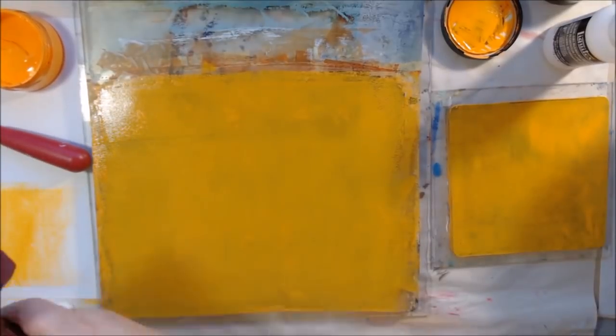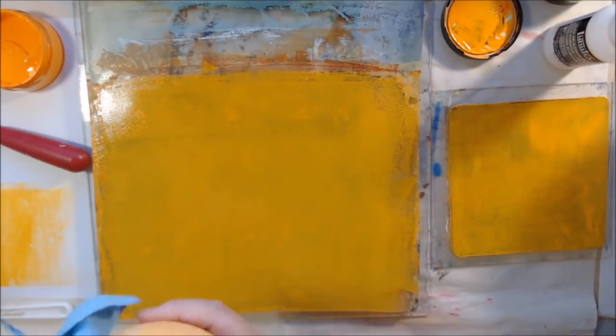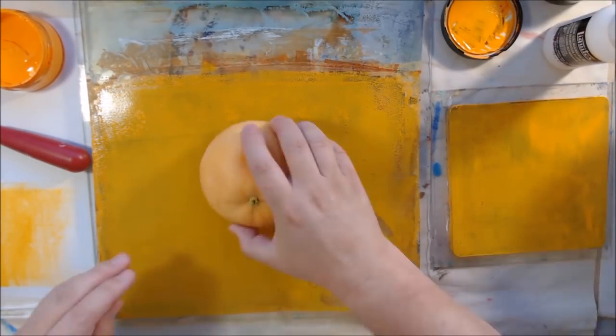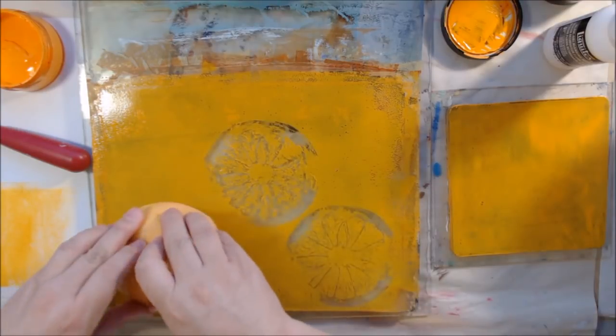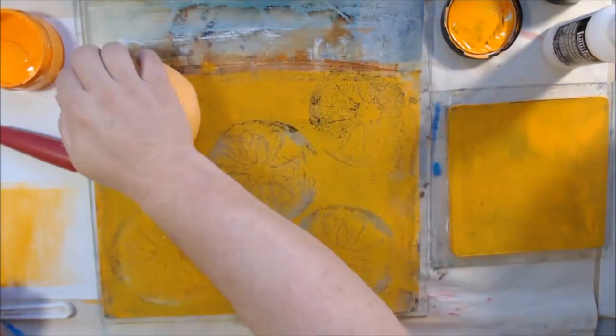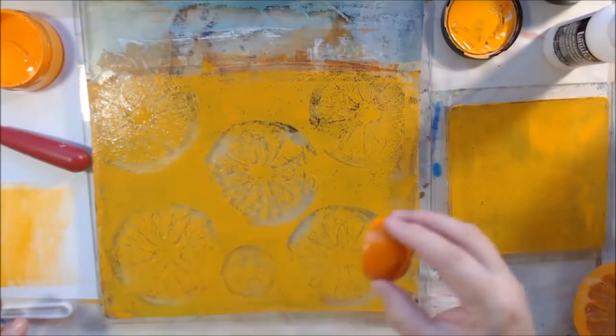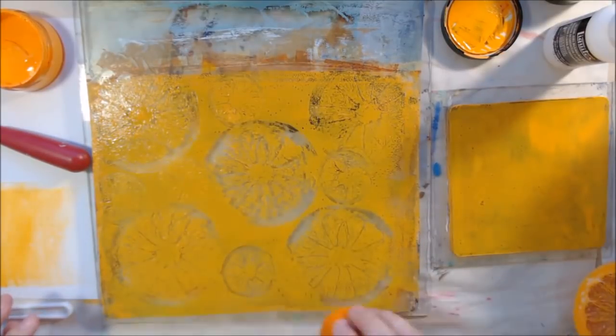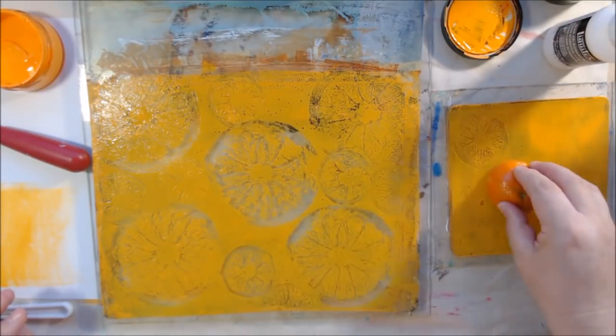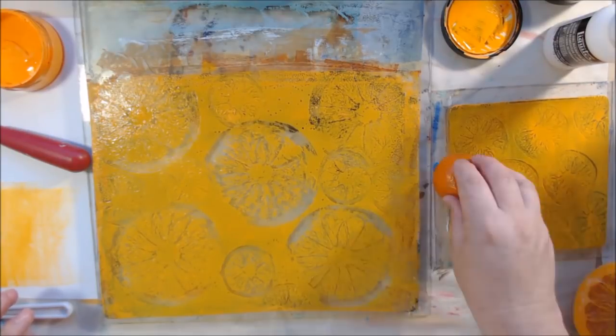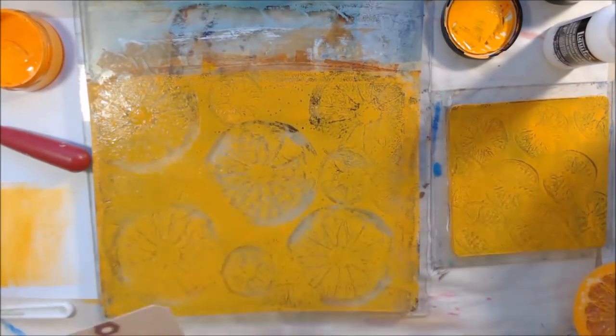You'll see the bottom of the celery in this video eventually. I think I start out with the citrus fruits, but basically I really think that fruit and vegetables have interesting shapes, so anything that has an interesting shape I think you should use on your gel plate.